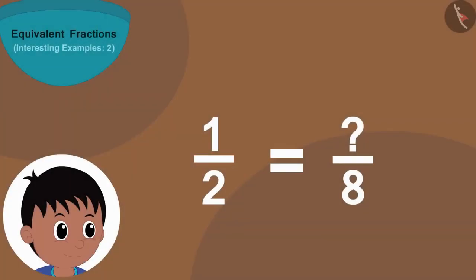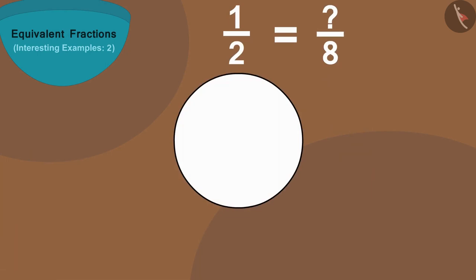Raju wrote this fraction. Here, the number 2 shows how many parts of a thing are created, and the number 1 shows that we took one of those two parts. Like, if we divide this circle into two equal parts and fill color in one part.